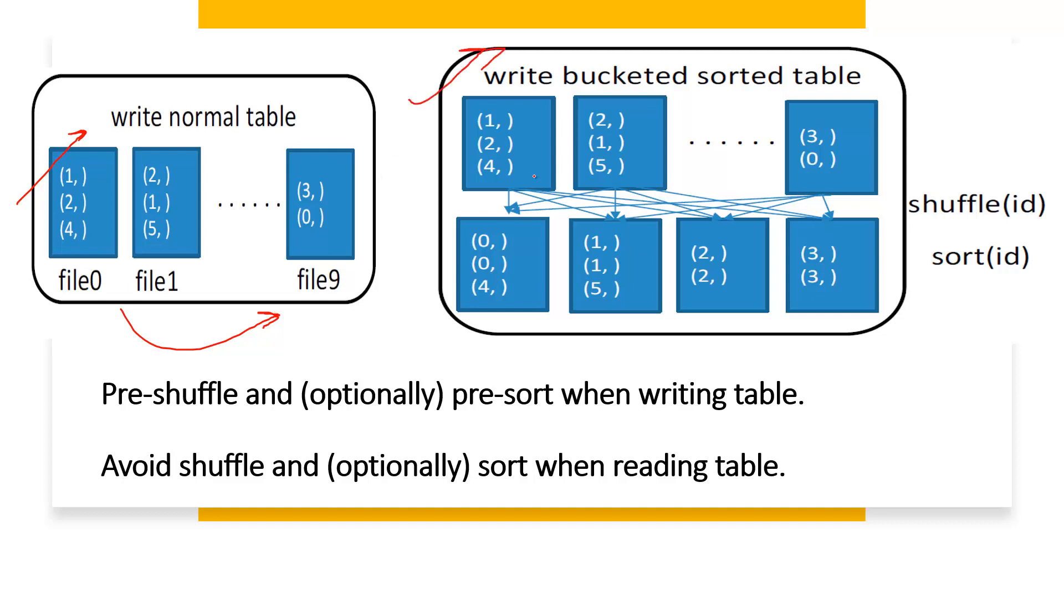If you try to write the same data into a bucketed table, you see that the data would be arranged into different buckets based on that bucket column ID. The shuffle of the data would happen so that data for the same ID will fall under the same bucket. Data for different keys will come into the same buckets, but data for the same IDs is going into the same buckets.